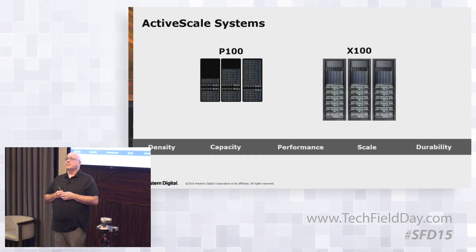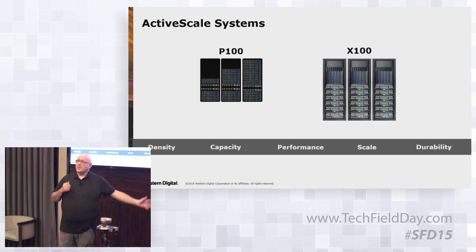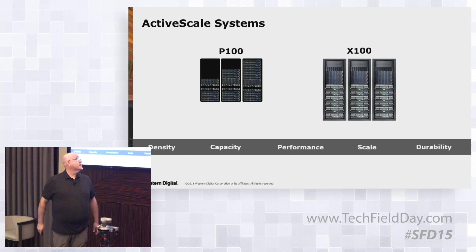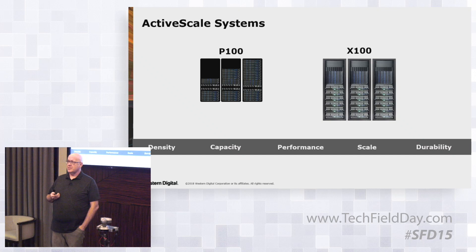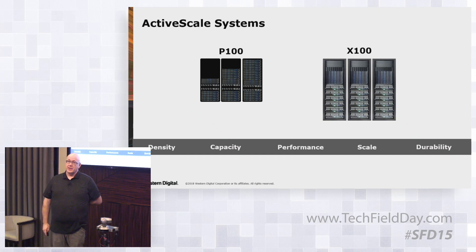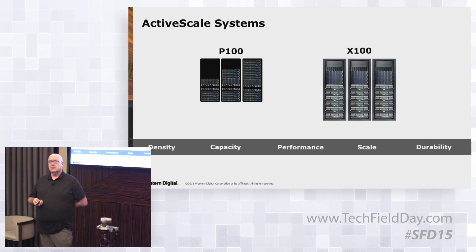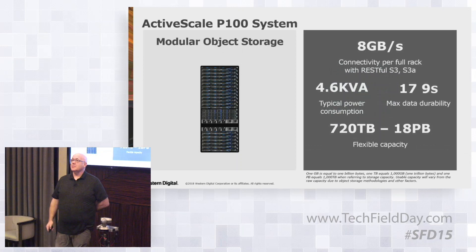The two hardware systems we offer today are the P100 and the X100. I'll take the blame for these names — I was in our marketing team when we decided on them. P was supposed to stand for Peta, and X was supposed to stand for Exascale — a clever marketing term that doesn't really mean anything. The P100 is our base entry unit. You can start as low as 700 terabytes in about 12U, and then the X100 is a full rack-scale system that stores up to 5.8 petabytes in a rack.